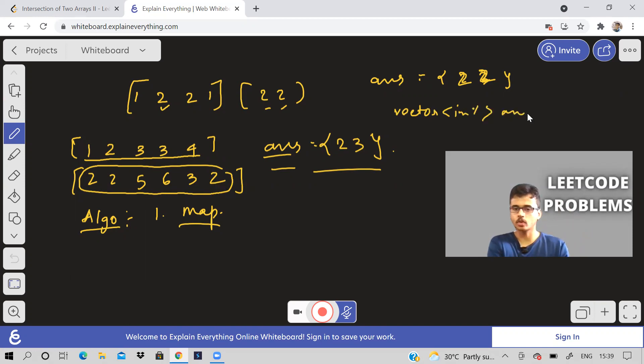We will then store that element which appears in the map. And now we're traversing the second array, not the first. First array we traverse only to get the elements and store it in the map. The second array we traverse and check if that element is there in the map. If it is there, we'll store it in the answer and we'll decrease the count of that element.